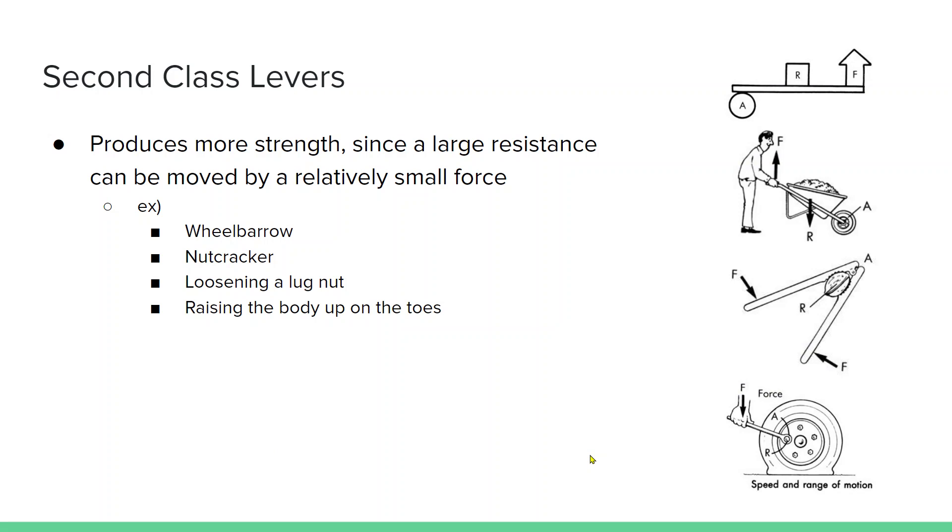Second class levers can produce more strength since a large resistance can be moved by a relatively small force. I mentioned the wheelbarrow. So here's our axis, the large resistance and the relatively smaller force. That's also what's behind a nutcracker. You have the axis, and then the resistance is close to that axis. And then you're applying the force on these long levers, which allows you to crack the nut. And the same when loosening a lug nut. We have a nice long lever arm that allows us to apply a relatively small force to loosen those lug nuts, which are pretty tight.